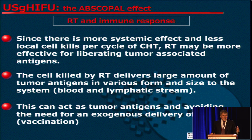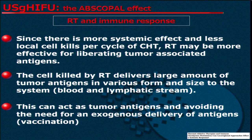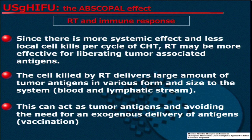The relationship between radiation therapy and immunoresponse is very well known. As assessed in this review paper, there is a more systemic effect and less local cell kill per cycle during chemotherapy than during radiation therapy. They may be more effective in producing tumor-associated antigens. The cell that will be killed by a local therapy may deliver a huge amount of tumor antigens in different forms and sizes to the system, potentially avoiding the need for exogenous delivery of antigens as happens during vaccination.